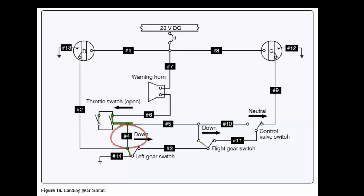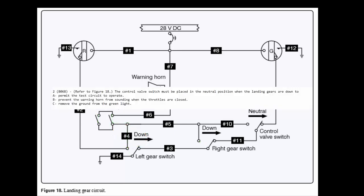Let's look at another question. This is what ASA calls question number 8068 on the same figure. It says the control valve switch must be placed in the neutral position when the landing gears are down. So they're asking us why do we put this control valve switch in the neutral position when the landing gears are down.